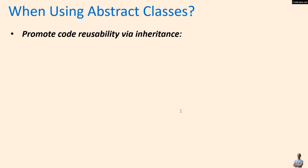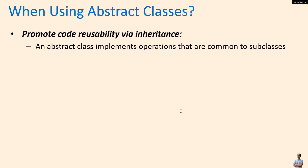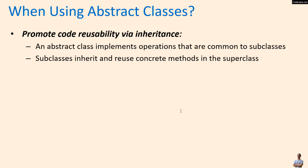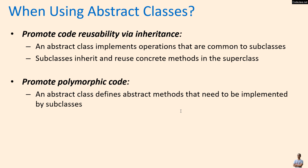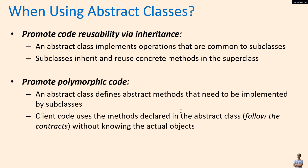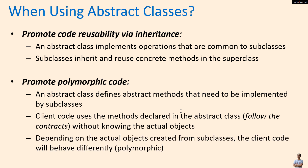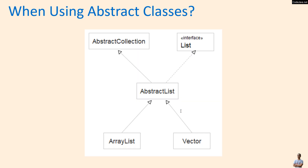The next question is: when should we use object classes? We can use object classes to promote code reusability via inheritance. An object class implements operations that are common to subclasses, and subclasses inherit and reuse those concrete methods. We can also use object class to promote polymorphic code — an object class defines object methods that need to be implemented by subclasses, and the client code uses the methods declared in the object class without knowing the actual objects, so the code behaves differently depending on the actual object.